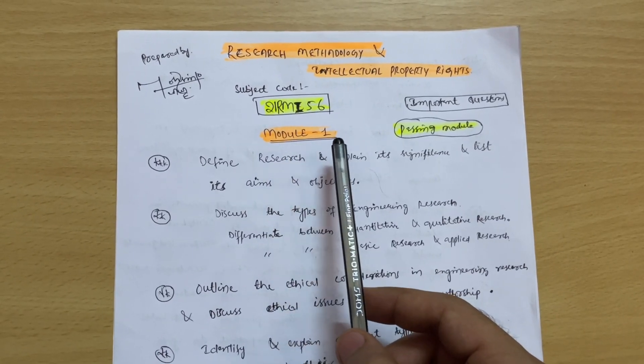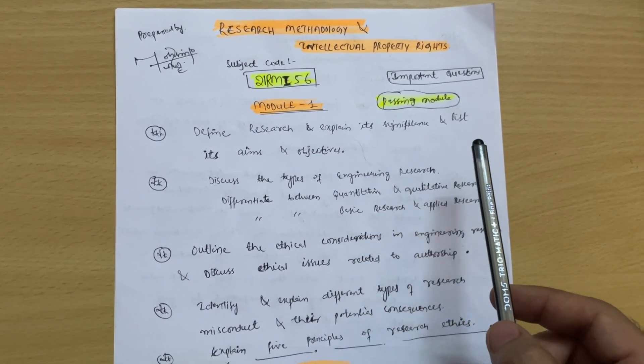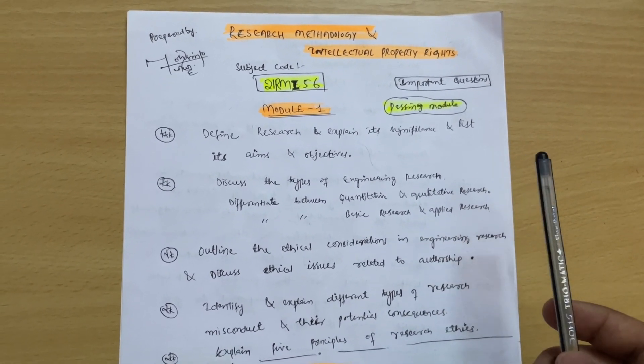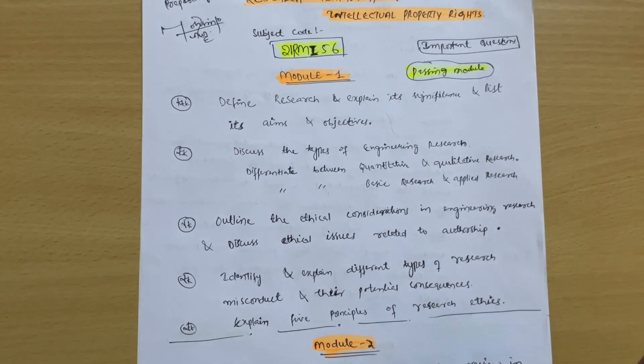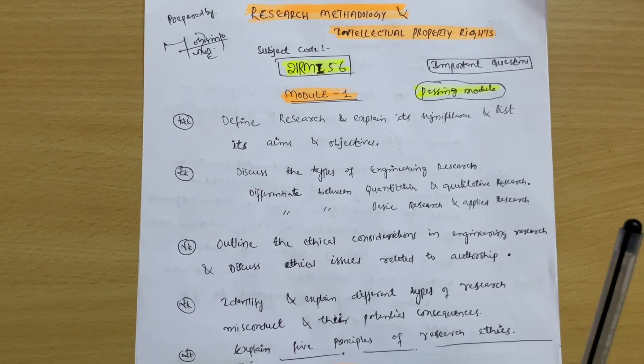Subject code is 21RMI56. These are the important questions and I have marked the passing modules. So what does this passing module mean? First priority should be these modules, whatever I have written over here, whatever I have marked as the passing module. In this particular subject, as you already know, there is a lot of syllabus.